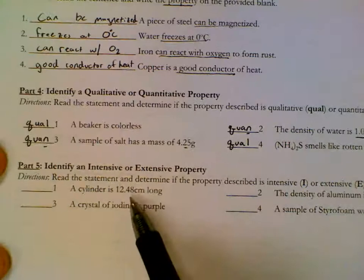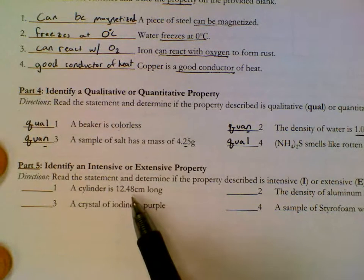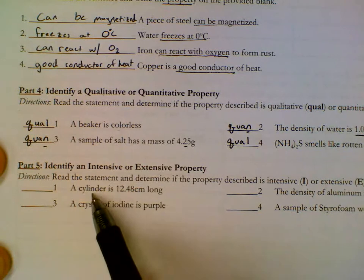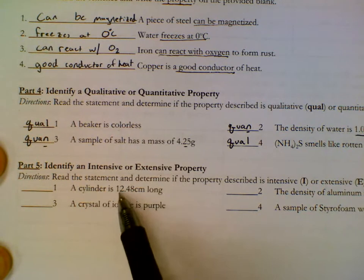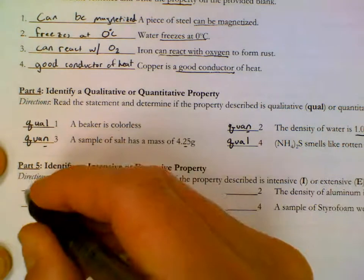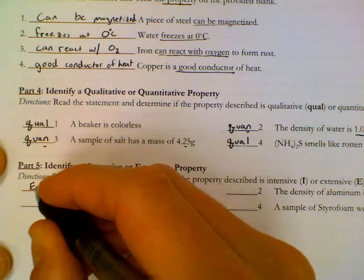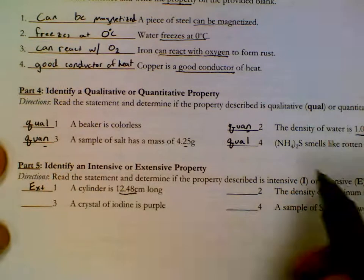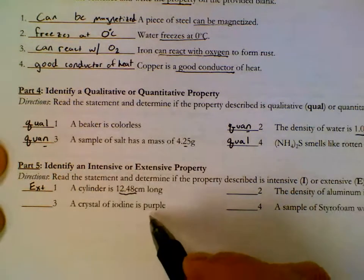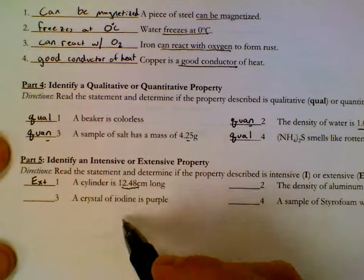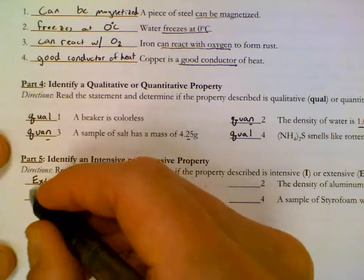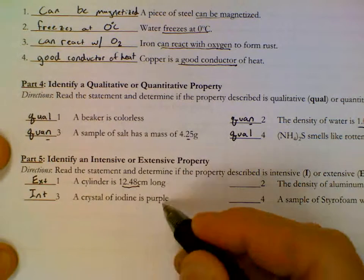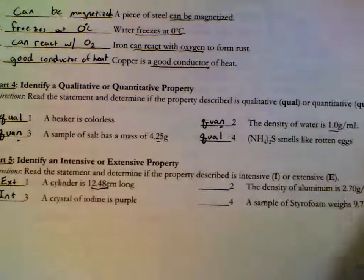A cylinder is 12.48 centimeters long. Using intensive and extensive properties. If I cut my cylinder in half, you no longer have this length. That makes this extensive. The size of that cylinder determines what I write down. The crystal of iodine is purple. It doesn't matter how big my crystal is. This means this is intensive. If I double my crystal size, it's still going to be purple. If I cut my crystal in half, it's still purple.